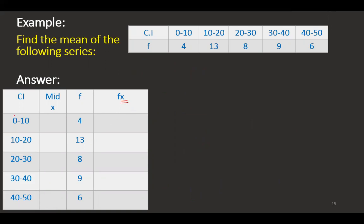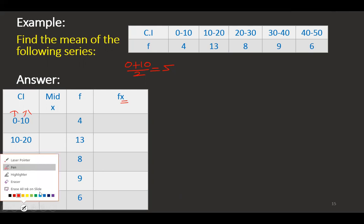What I am going to do is: this is called the lower limit and this is called the upper limit. I am going to calculate lower limit plus upper limit divided by 2 — that will be my x. I will call this the mid x, and I am going to write it in the table.